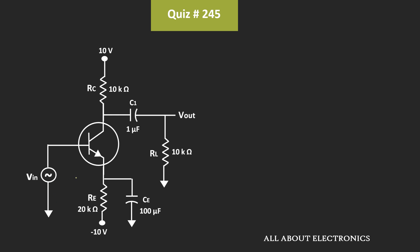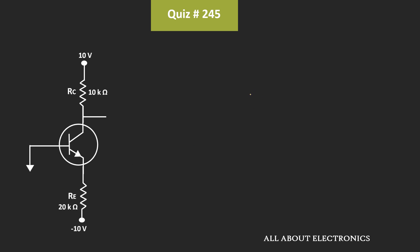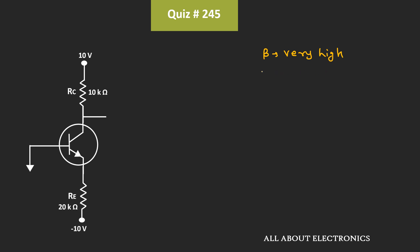For the DC analysis, if we see the equivalent circuit, then it will look like this. Now for this given circuit, let's find the collector current. Here, we have been given that the base current is negligible — or indirectly, we can say that the value of β is very high. That means this collector current Ic is approximately equal to the emitter current. So first of all, let's find the value of this emitter current.